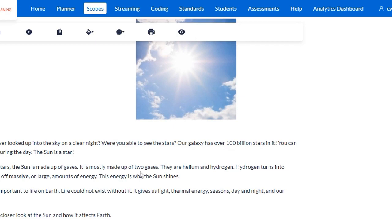The sun is a star. Like other stars, the sun is made up of gases. It is mostly made up of two gases: helium and hydrogen. Hydrogen turns into helium, giving off massive or large amounts of energy. This energy is why the sun shines.